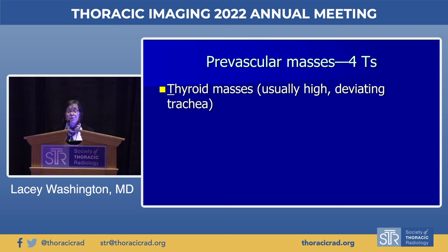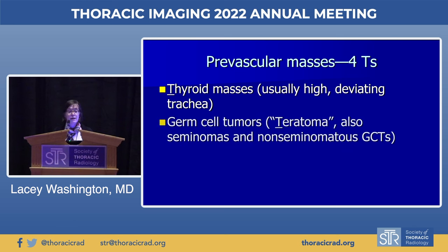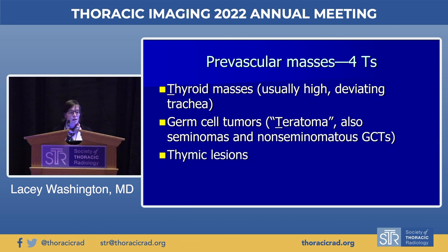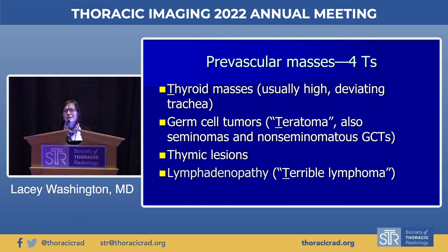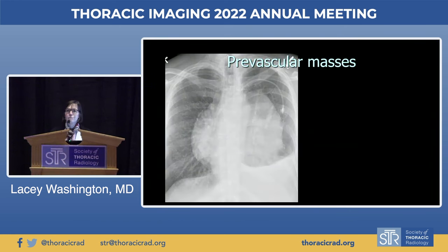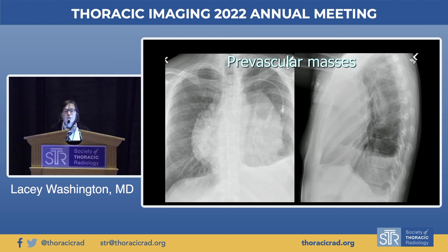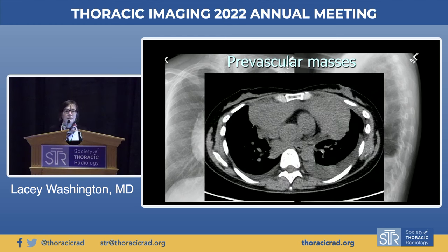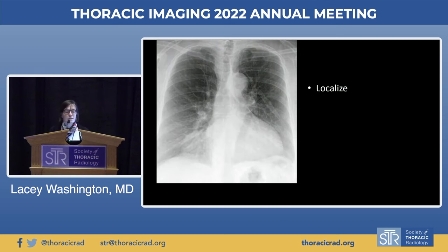We all know the differential diagnosis for prevascular masses — the classic four T's: thyroid masses, which are usually high and may deviate the trachea; germ cell tumors, which include teratomas, seminomas, and non-seminomatous germ cell tumors; thymic lesions; and lymphadenopathy, which can be in any compartment of the mediastinum. This prevascular mass, confirmed on the lateral view and CT, is a large anterior mediastinal lymphoma.